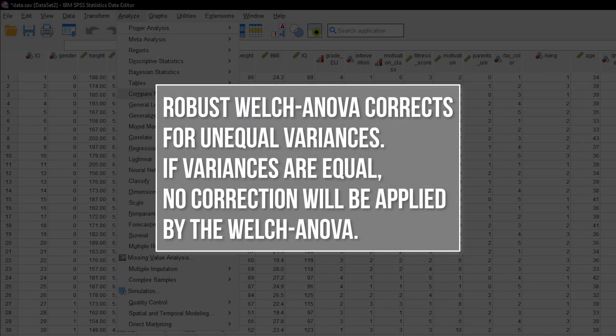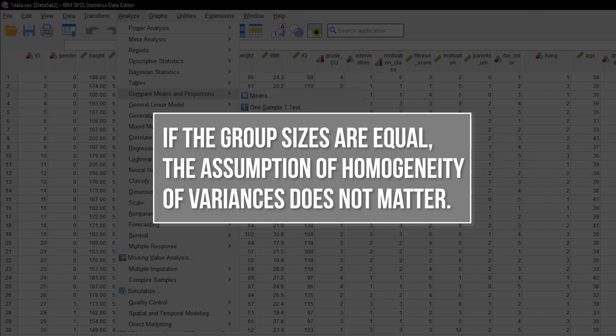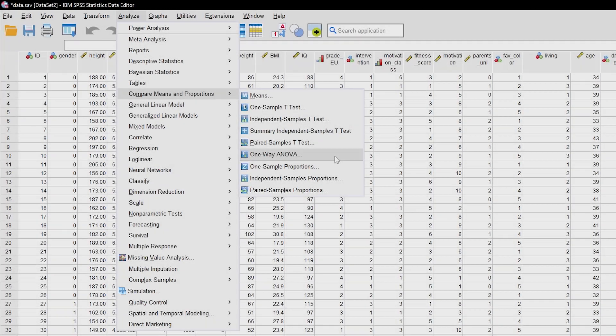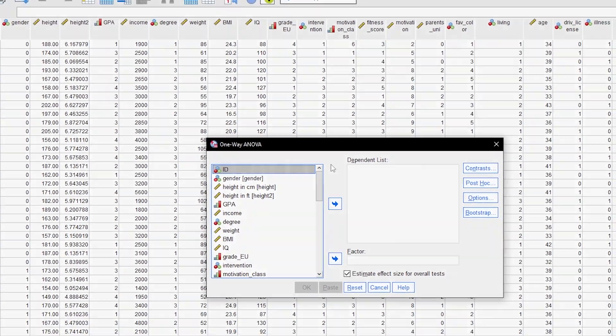Eventually, you can avoid this dilemma by simply doing a robust calculation. If violations are present, a correction will be applied. If no violations exist, no correction will be applied. Furthermore, if you have equal group sizes, the assumption goes out the window altogether. As we got this out of the way, let's calculate the one-way ANOVA now.